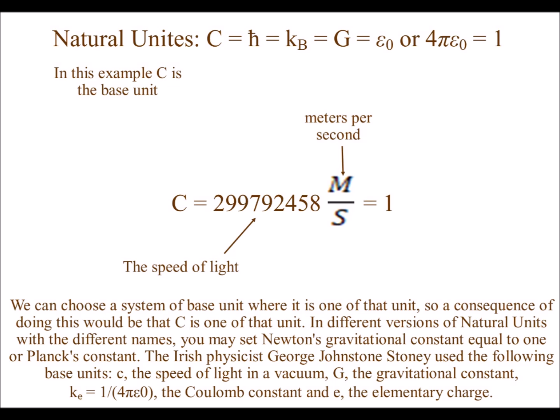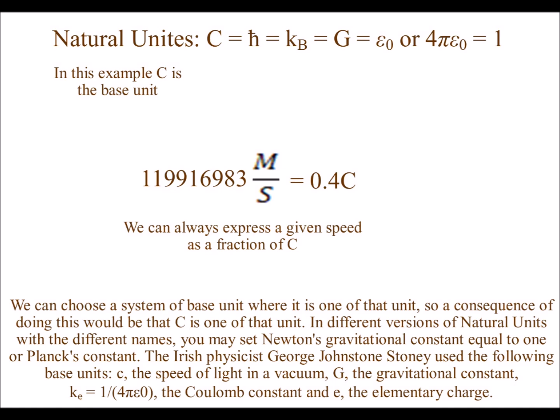We can always express a given speed as a fraction of c. If I'm given a value of about 120 million meters per second, I can rate it as 0.4c. When we replace the c with one, we get a dimensionless number.